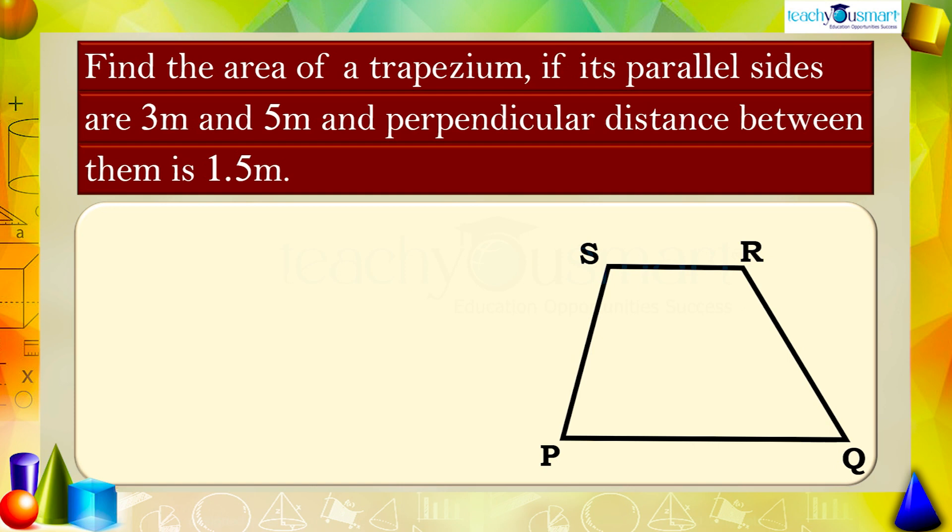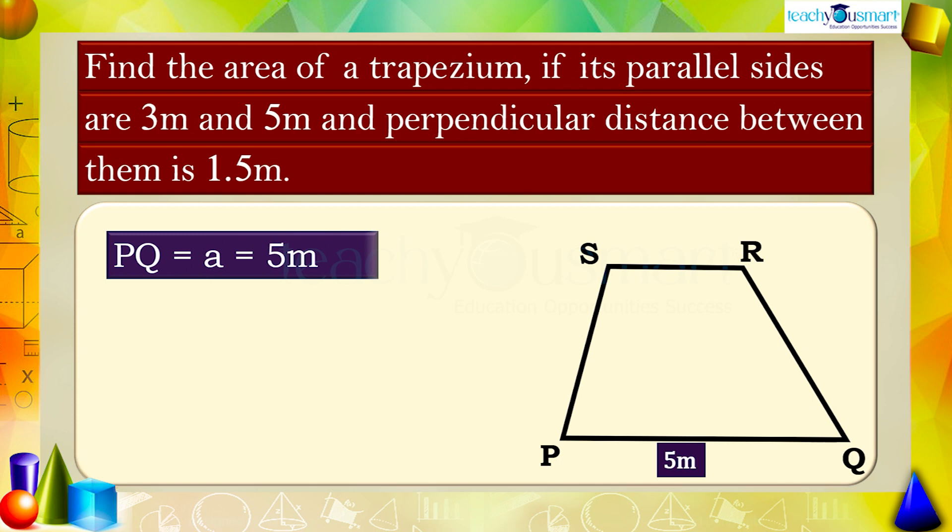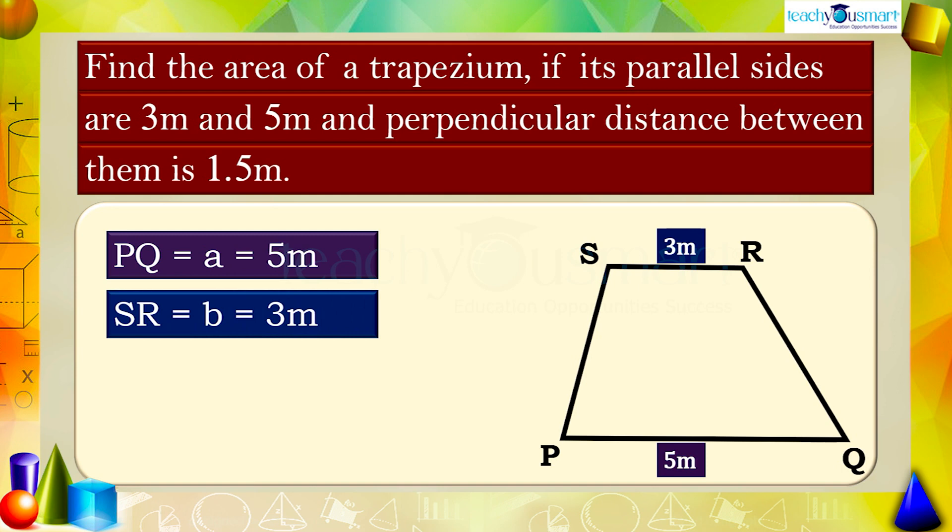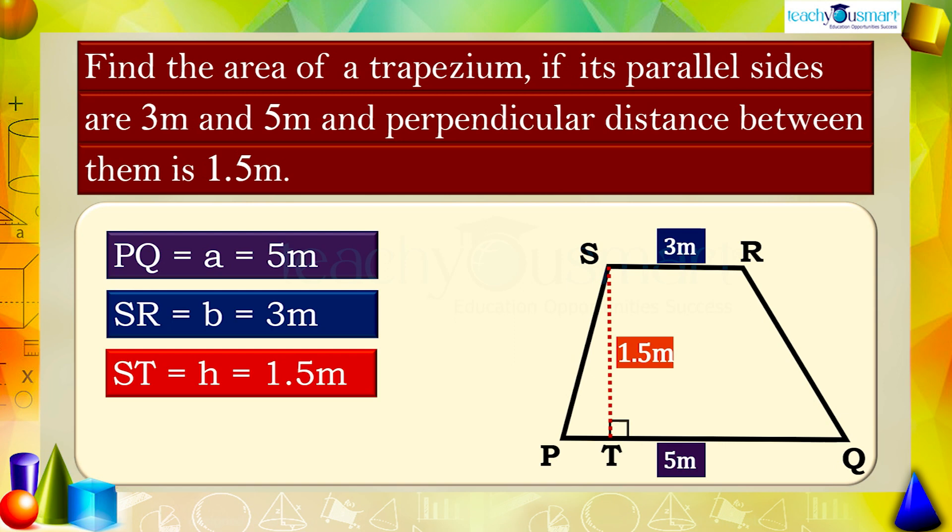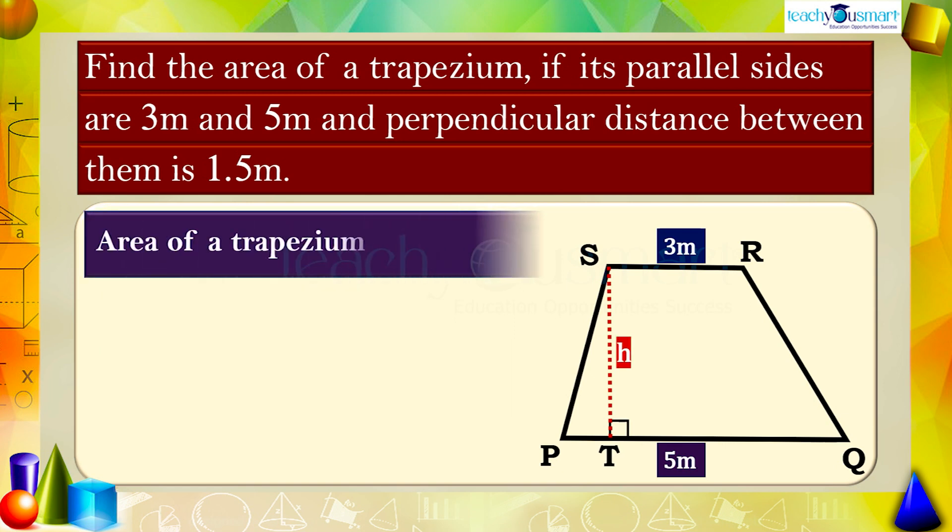Given that PQ equals a equals 5 meters, SR equals b equals 3 meters, and the perpendicular distance between PQ and SR, that is h equals 1.5 meters. We have the area of a trapezium equals half h multiplied by a plus b.